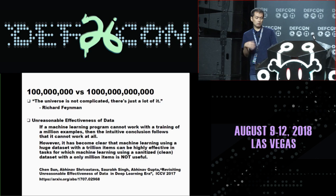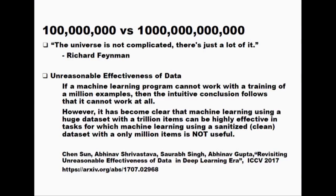And machine learning — this one is one million versus one trillion. Machine learning has a table property. If machine learning doesn't work on a dataset comprising one million to one trillion data points, what is needed? What is needed is a much bigger dataset. This is unexpected — it's a machine learning failure on a dataset comprising one million to one trillion data points. The intuitive conclusion is that it doesn't work at all. But according to this paper, all we need is much more and bigger packets. So the situation is very curious, isn't it?